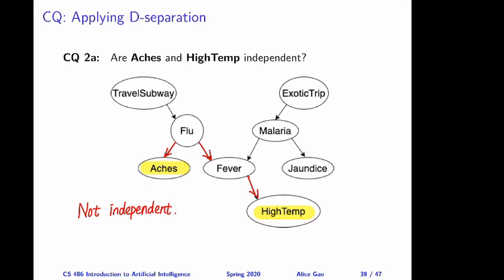To see why, we need to look at the path between the two. This path goes through flu and fever. For each of flu and fever, we apply one of the three rules. For flu, the links around flu correspond to rule number two. Applying rule two: if we observe flu it blocks the path, but if we don't observe flu it does not block the path. In this case we do not observe flu, so it does not block the path — there is a connection through the node. For fever, we apply rule number one, and because we do not observe fever it does not block the path either. So this path is connected the whole way from x to high temperature, which means the two variables are not independent.